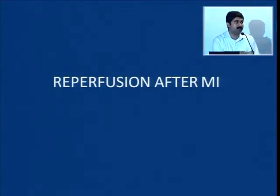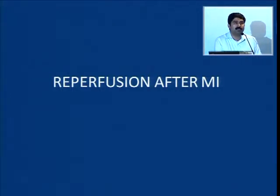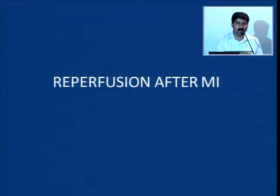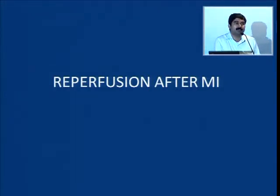We will discuss about reperfusion in MI. As we all know, a total occlusion of the culprit artery leads to an ST elevation MI, and a subtotal occlusion with thrombus causing subocclusive or partial occlusion of the lumen produces a non-ST elevation MI. Once an MI is diagnosed, we try to reperfuse the ischemic myocardium either by means of thrombolysis or by PCI.